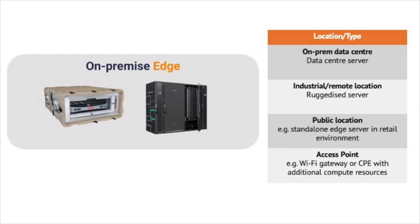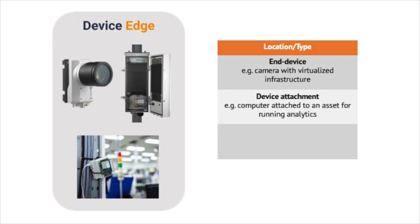At the device edge, we define this as the edge compute residing on the end device — that might be on a camera or potentially on a drone. This also includes where a separate device is attached to an end device, for example for asset monitoring — attaching an edge node to an asset to monitor its whereabouts or condition and feed that data back for analysis. These are probably not edge servers in the traditional sense; they're more likely to be a small computer or hardware installed on the device itself.